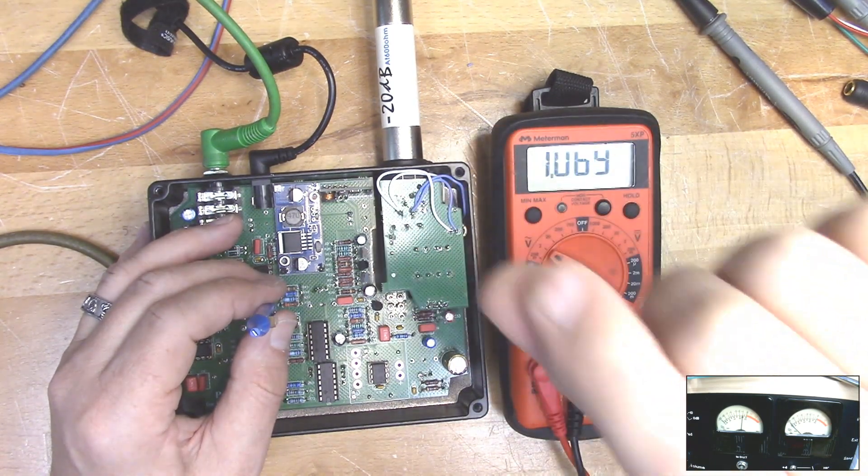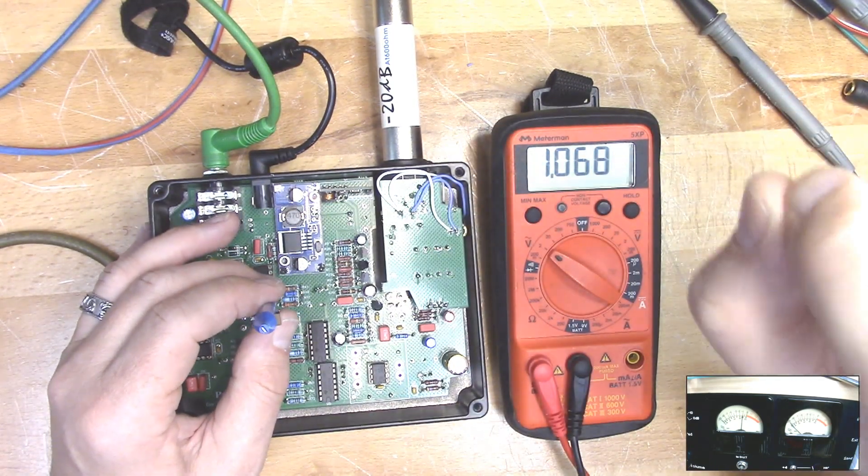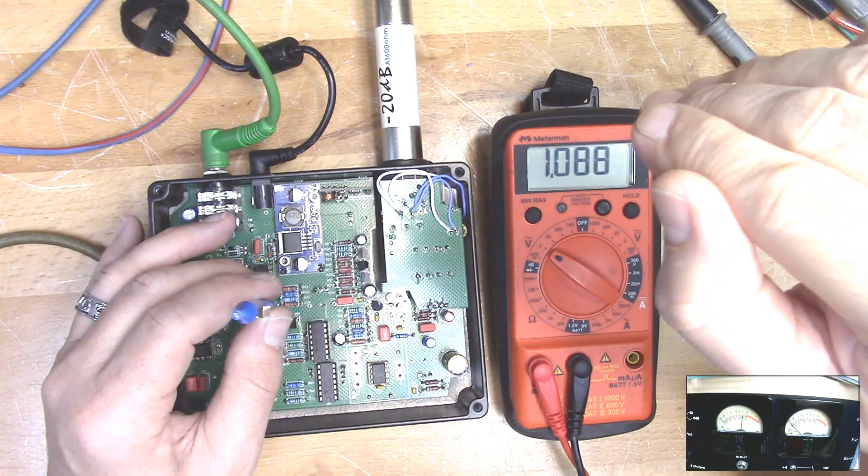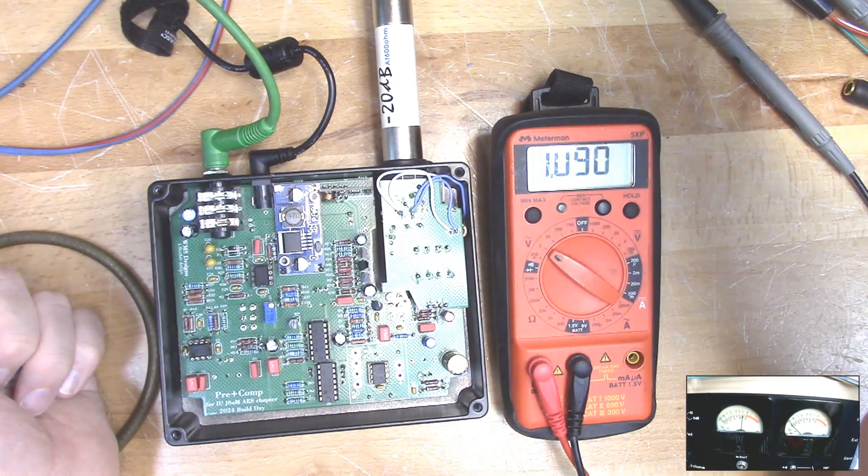And what this does is it sets the JFET transistor to just be in conduction. So it's just starting to gain reduce. And that's put you in the right spot for the compression beyond that.